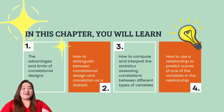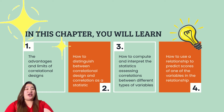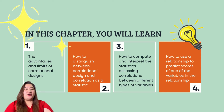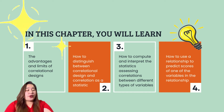In this chapter, you'll learn the advantages and limits of correlational design, how to distinguish between correlational design and correlation as a statistic, how to compute and interpret statistics assessing correlations between different types of variables, and how to use a relationship to predict scores of one of the variables in the relationship.